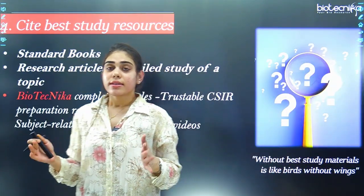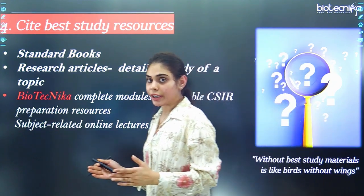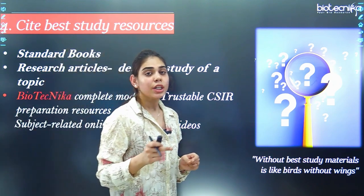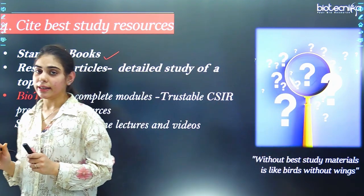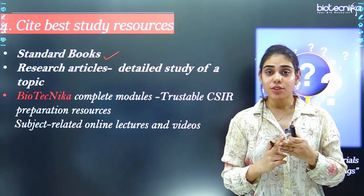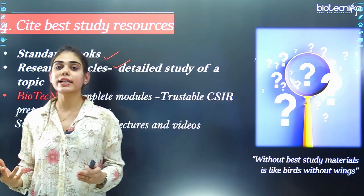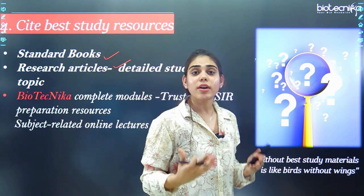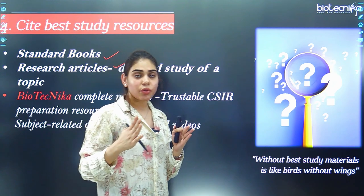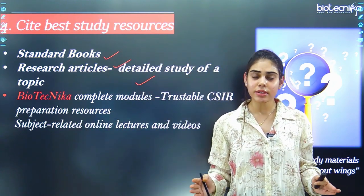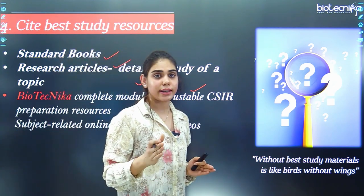The fourth topic is about having the best study resources for Unit 5, because without best study material, it is like a bird without wings. You need a standard book — already mentioned in the earlier slide — there are four standard books you can refer to. It is also very important to develop a habit of reading research or review articles, as they give a detailed and experimental view of the subject. If standard books are too hectic, you can use Biotechnica's complete modules, which include online video lectures and classes.